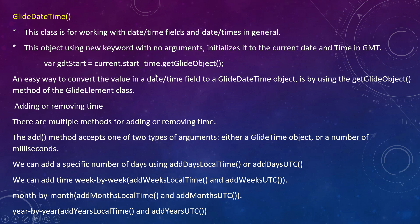Using dot getGlideObject, we can get the time object. This is an easy way to convert a field value into a GlideDateTime object by using the getGlideObject method.